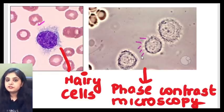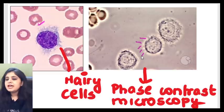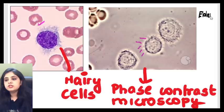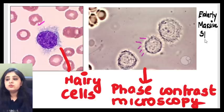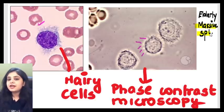How would this patient present? Usually this is going to be an elderly patient who comes to you with massive splenomegaly — a dragging sensation in the abdomen. Massive splenomegaly is something that is usually mentioned in the exam question and is definitely an important clinical pointer.